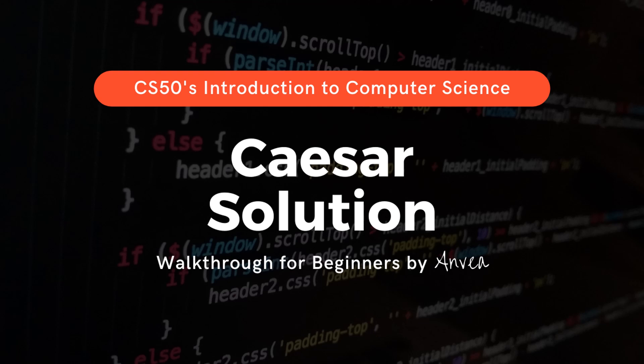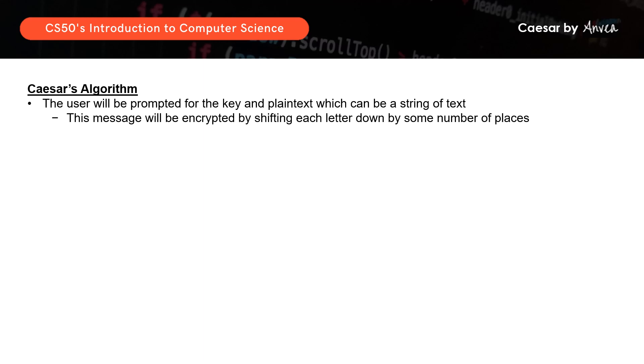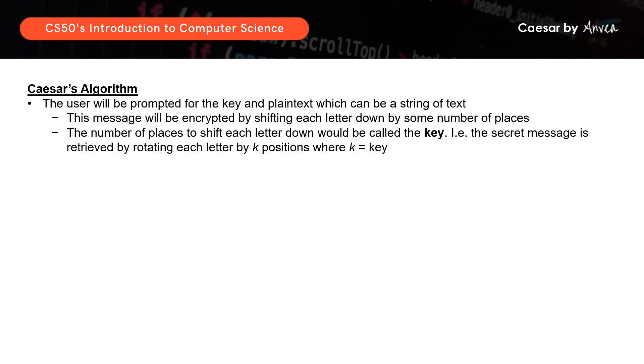Hi everyone! For today, we'll be working on a solution for problem set 2, which is Caesar. In this problem set, we'll be working on Caesar's algorithm where we want to encrypt some plain text based on a key. The user will be prompted for a key and an input string of text, and the plain text will be encrypted by shifting each letter down by some number of places based on that key.